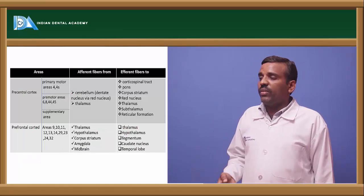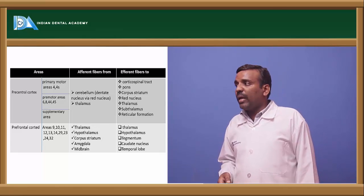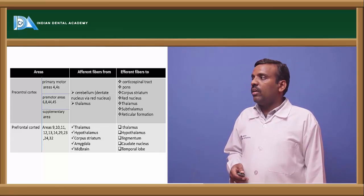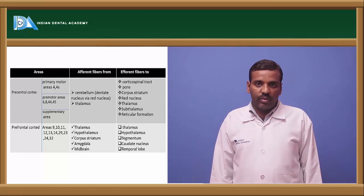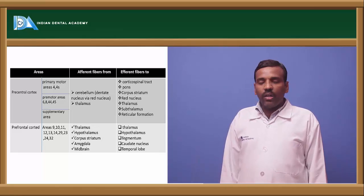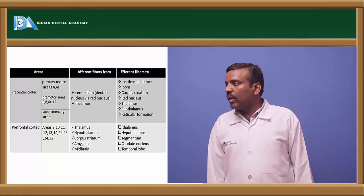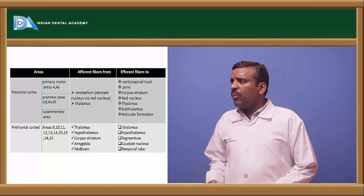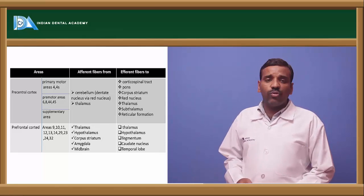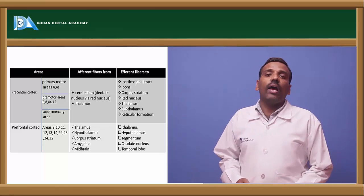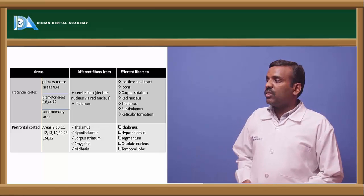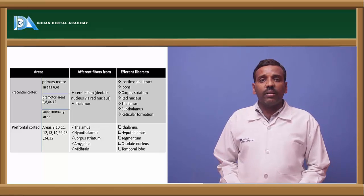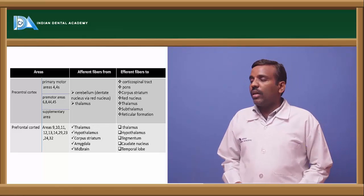The prefrontal cortex contains primary motor area 4 and 4s, pre-motor area 6, and areas 8, 44, and 45. Afferent fibers come from the cerebellum and thalamus. Efferent fibers go to the corticospinal tract, pons, corpus striatum, red nucleus, thalamus, subthalamus, and reticular formation. The prefrontal cortex covers areas 9, 10, 11, 12, 13, 14, 29, 23, 24, and 32. Its afferent connections include thalamus, hypothalamus, corpus striatum, amygdala, and midbrain; efferent connections go to thalamus, hypothalamus, tegmentum, caudate nucleus, and temporal lobe.